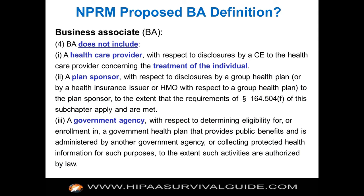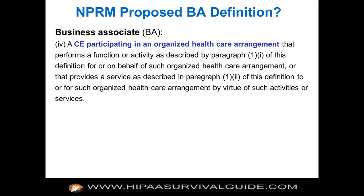If you can get your mind around these basic definitions and apply them, you can sort through the majority of cases to identify who is a BA and who is not. A BA does not include a health care provider — because of the treatment, payment, and operations exceptions. A plan sponsor is not a BA. A government agency is not a BA. And entities participating in an organized health care arrangement are not business associates of each other.